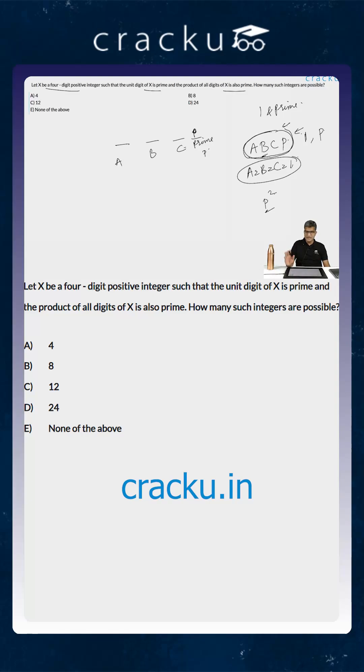The only way that will happen is if a is equal to, b is equal to, c is equal to 1. So now you have 1, 1, 1 as the first three digits and the last digit is a prime number.